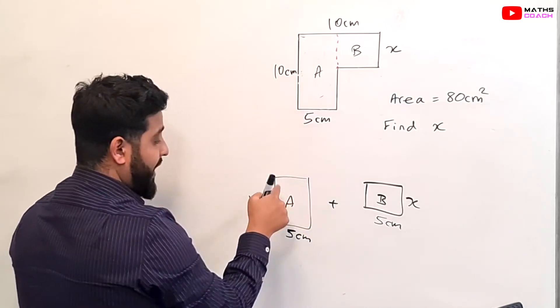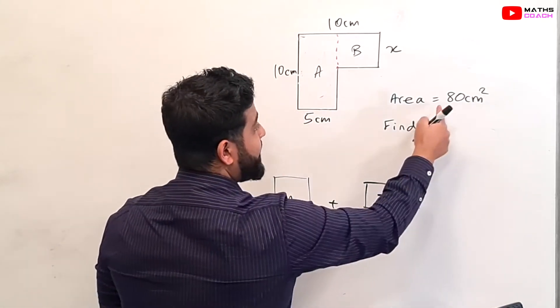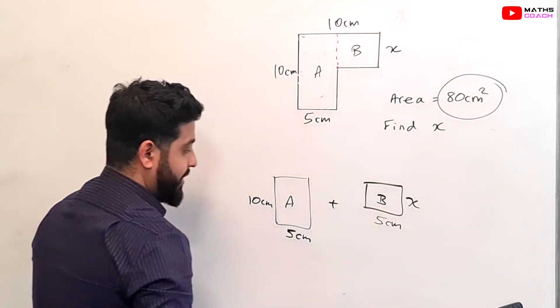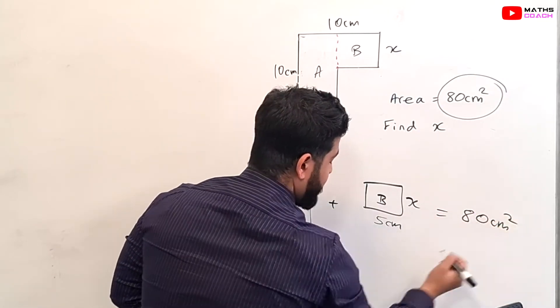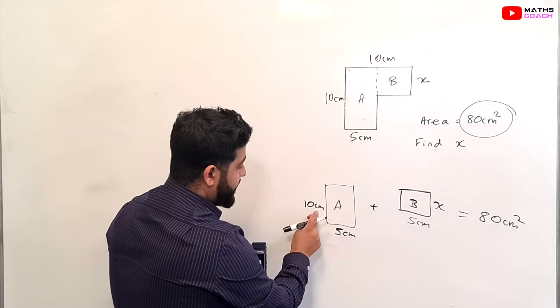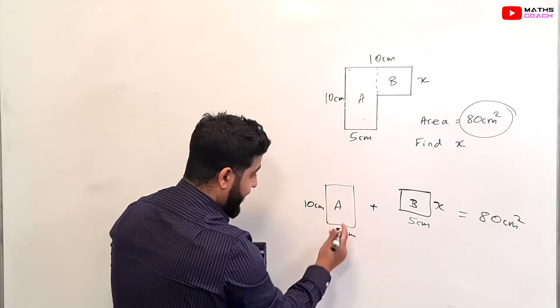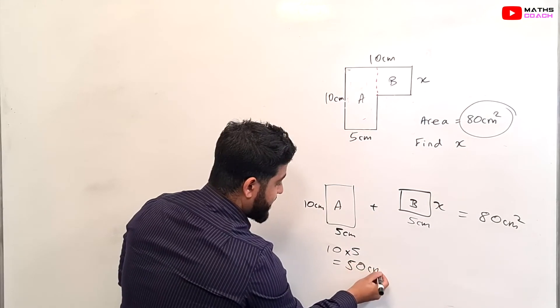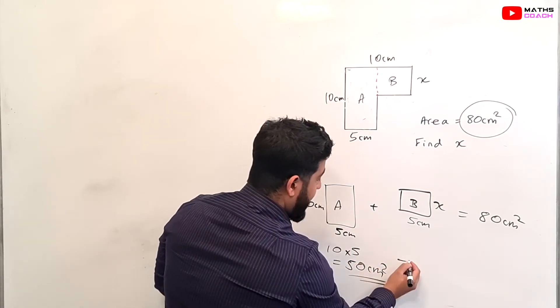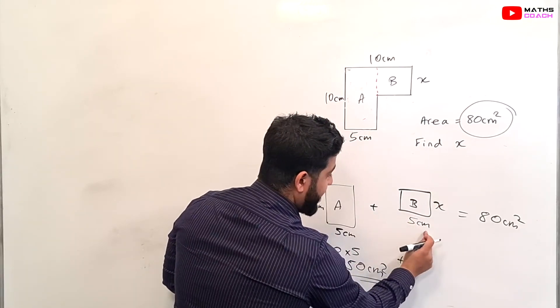Now we know that the area of that plus the area of that is equal to 80 centimeters squared. So therefore we can write this here, 80 centimeters squared. So now what we can do is do 10 times 5 to find the area of A. So 10 times 5 equals 50 centimeters squared.